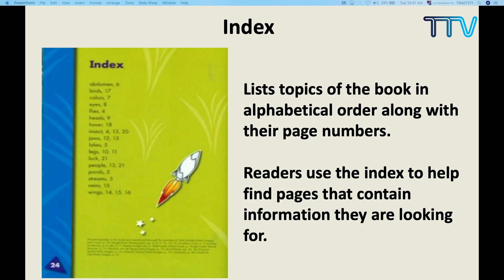The third text feature is index. What is index? Index lists the topics of the book in alphabetical order along with their page numbers. Readers use the index to help find pages that contain information they are looking for.